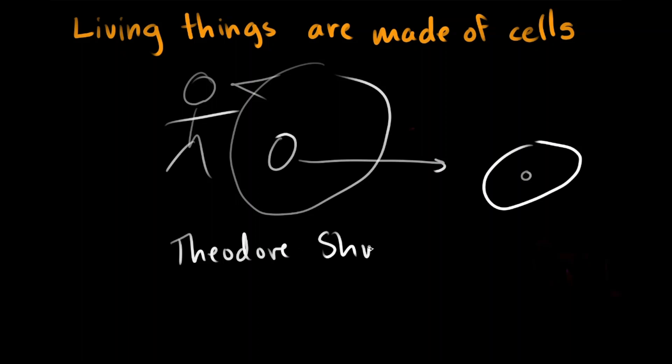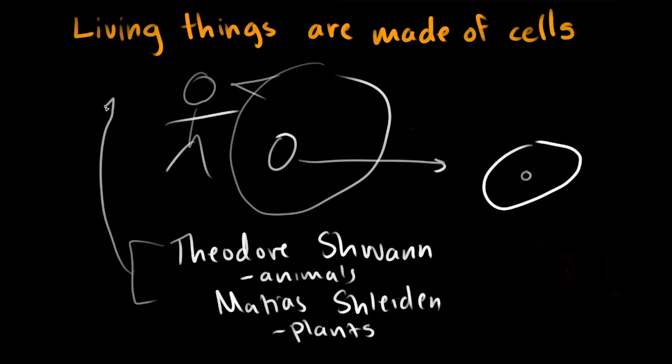More than that, we can also thank two main scientists for piloting the idea of cells being key to life. The first is Theodor Schwann, who procured the idea that all animals were made of cells. And then Matthias Schleiden, who found out that all plants were made out of cells. From their combined work in cell theory, these two scientists have connected their findings to come up with the first characteristic of life.